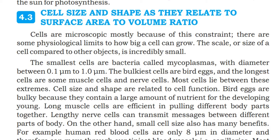The smallest cells are bacteria called mycoplasmas, with a diameter between 0.1 μm to 1.0 μm. Because it is a round structure, its diameter ranges from 0.1 μm to 1.0 μm. The bulkiest cells are bird eggs.